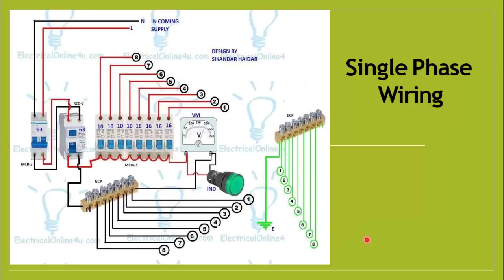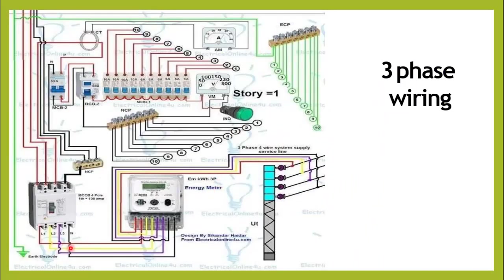Here is a short glimpse of how single-phase wiring is done. We have two conductors — one is the phase and the other is neutral. The neutral is common and is connected to all the appliances, whereas the phase passes through the circuit breaker and each circuit will have its own circuit breaker. This is how single-phase wiring is done.